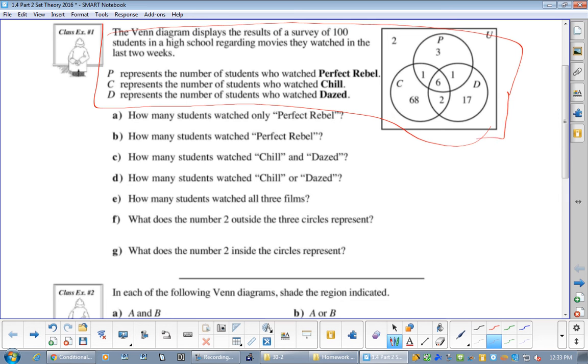P represents the number of students who watched Perfect Rebel, C represents the number of students who watched Chill, and D represents the number of students that watched Dazed. This is a diploma question here, and they would just ask one of the following. Now, just by looking at that number there, do we know what that means? All I want you to do right now is fill in the numbers for A to G.